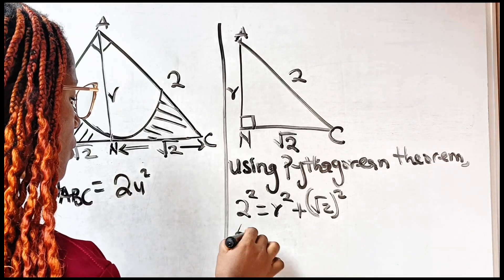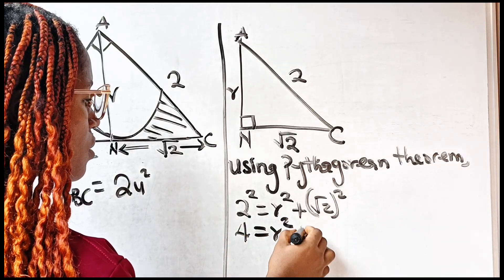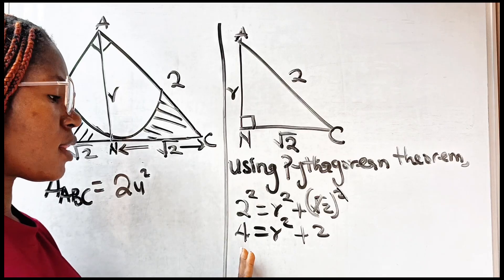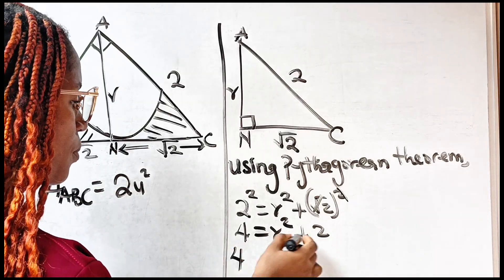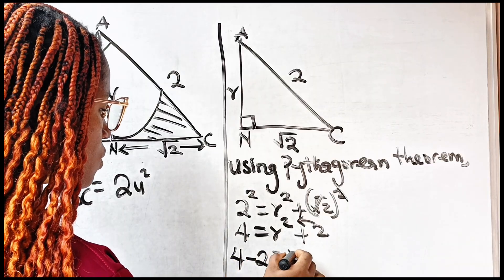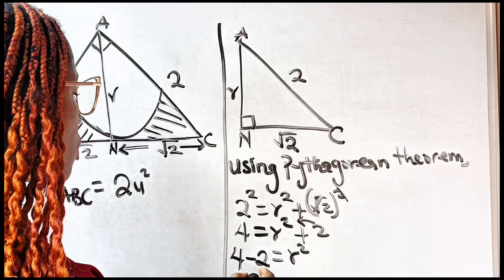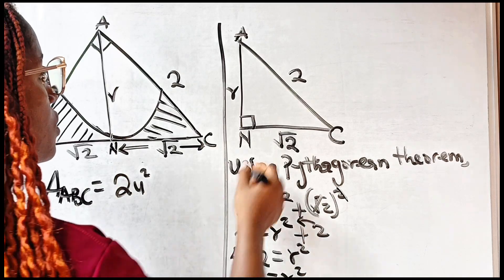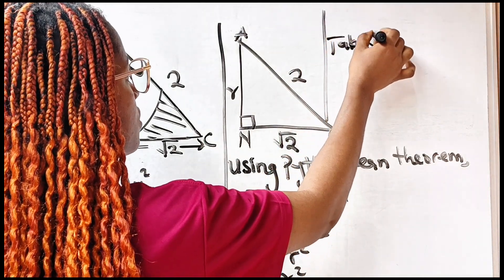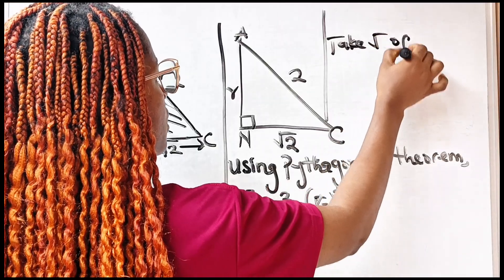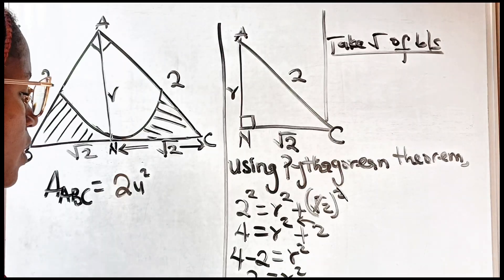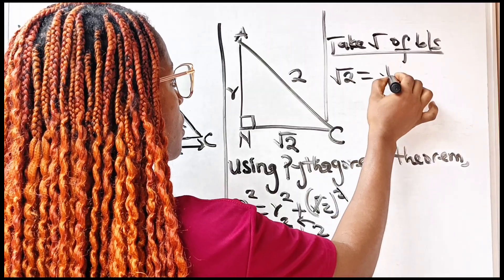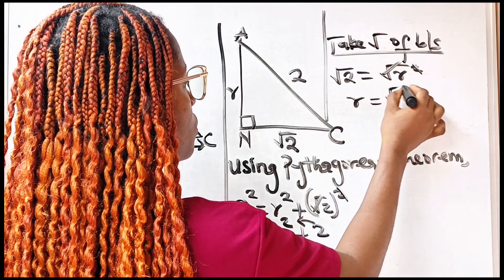2 squared is 4, equal to R squared plus — removing the square root — plus 2. Transferring to the left-hand side: 4 minus 2 equals R squared. So 2 is equal to R squared. To get the value of R, we take the square root of both sides. So we have root 2 equal to R. Therefore R is equal to root 2.